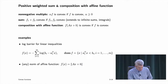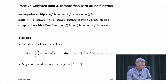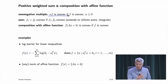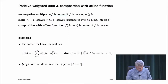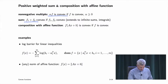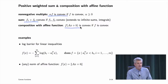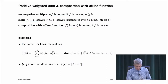Let's start with the obvious ones: positive weighted sums and composition with an affine function. Non-negative multiples and sums of convex functions are convex. If you pre-compose a convex function with an affine function, the result is convex. Same for concave. These things do have to be proven, though they're obvious.